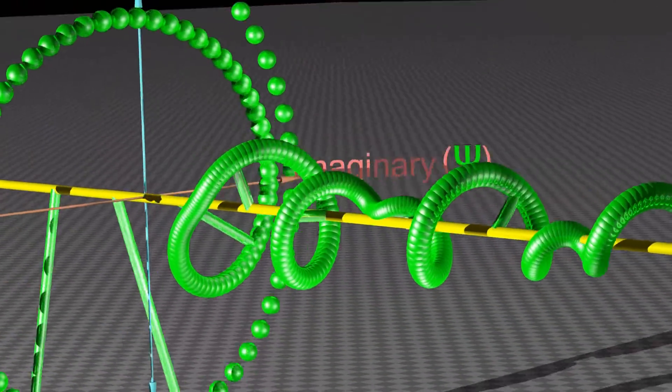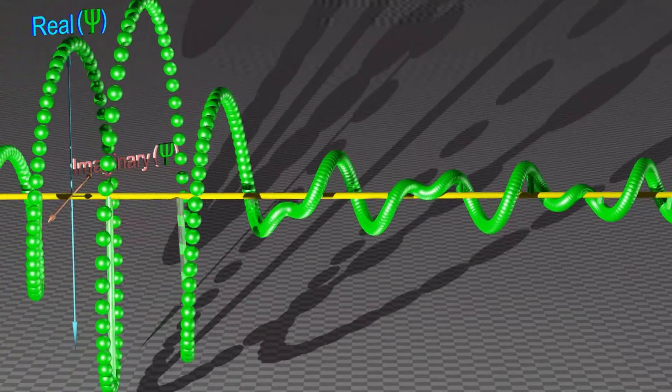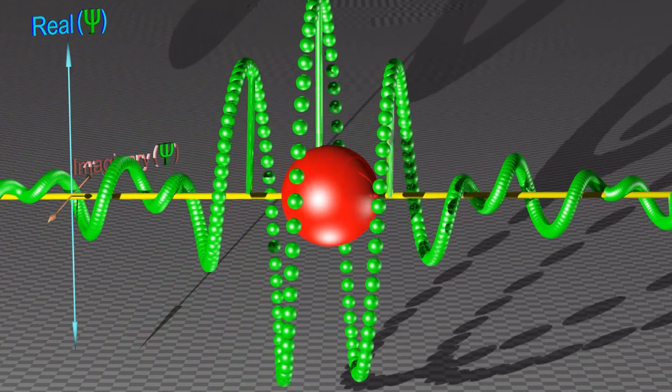If we have a quantum particle moving freely through space, its wave function may look as shown.